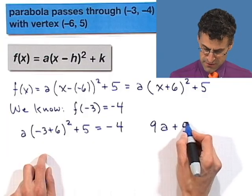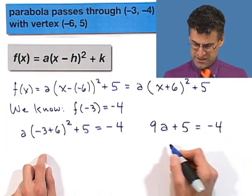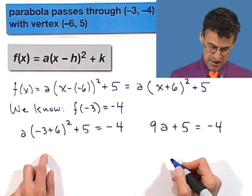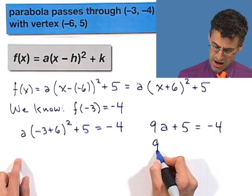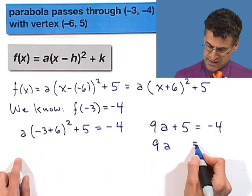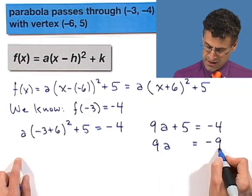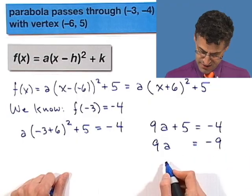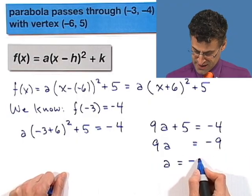9a plus 5 equals negative 4, and we can solve this. Subtract 5 from both sides, and I see that 9a is equal to negative 9. Divide both sides by 9. You can't help yourself. A equals negative 1.